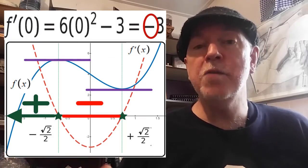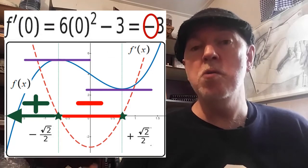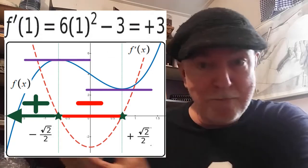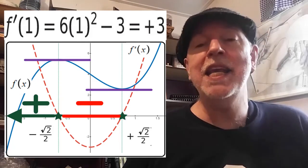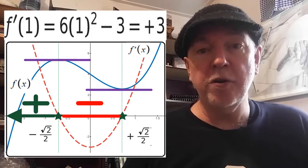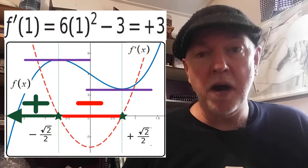Finally, to the right of root 2 over 2, so some convenient positive value, we find that the first derivative is going to be positive.